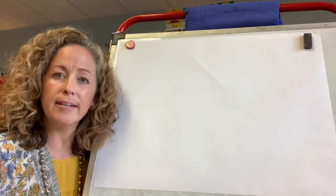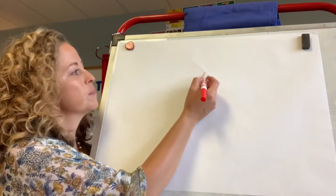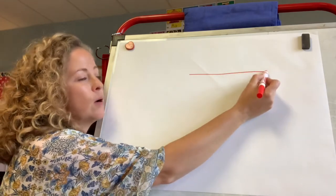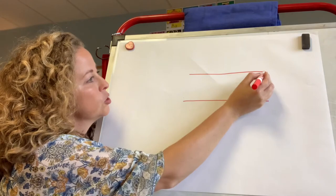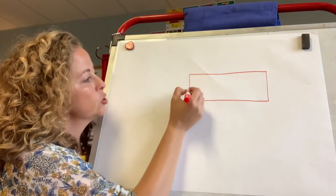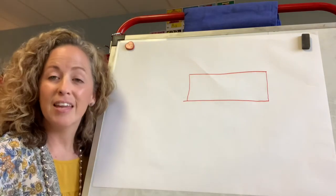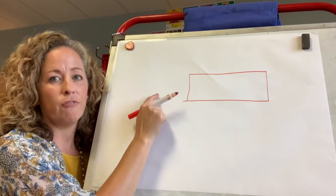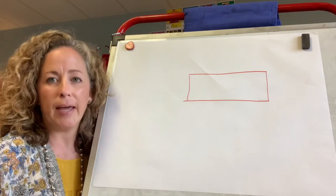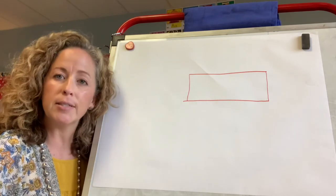A rectangle has two long sides and two short sides. Long, long, short, short. Rectangle. Next, in front of the rectangle I'm going to make a square. A square has four sides, they're all the same.